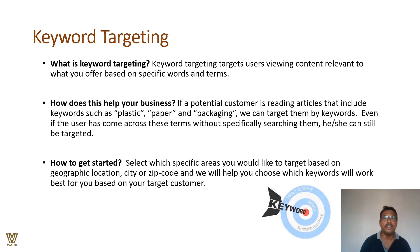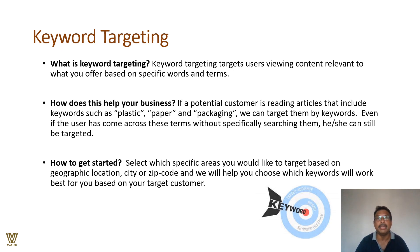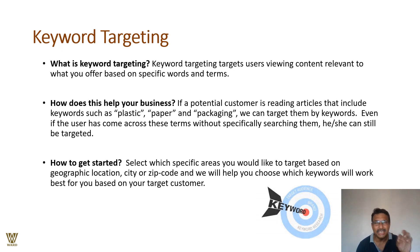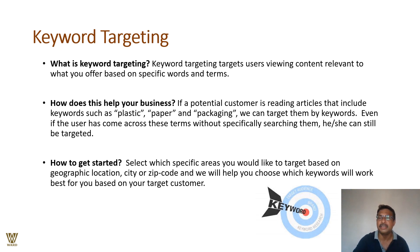Keyword targeting uses content relevant to what viewers frequently search — for example, restaurant offers, best drinks, maximum discounts, or a particular cuisine. If a potential customer is reading an article that includes such keywords they frequently use, we can target them. Even if a user has come across a term without specifically searching for it, they can still be targeted. To get started, select areas by geographic location, city, or zip code, and focus on the keywords relevant to your target customer.